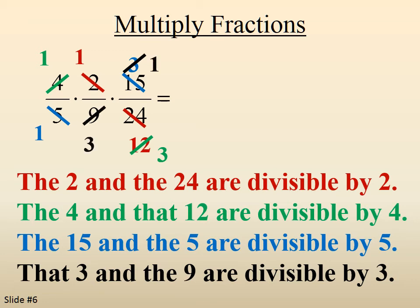So the 3 on top becomes a 1, the 9 on the bottom becomes a 3. Now when we multiply across, in the numerator we get 1 times 1 times 1, which is just 1. And on the bottom, 1 times 3 times 3, which leaves us with a 9.